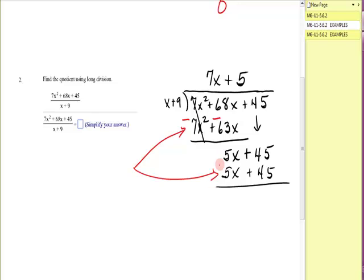Time to change those signs. Change, change, and I get a remainder of 0. So there's my quotient.